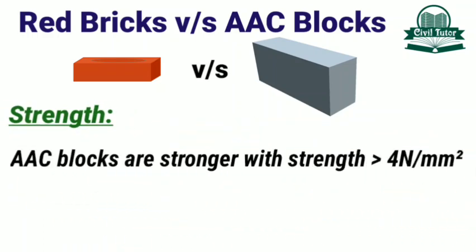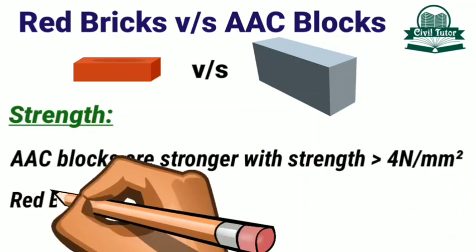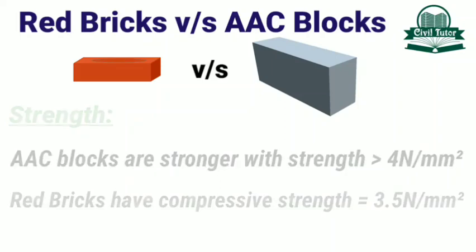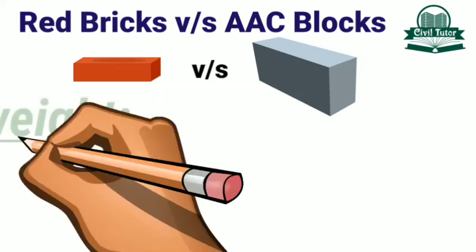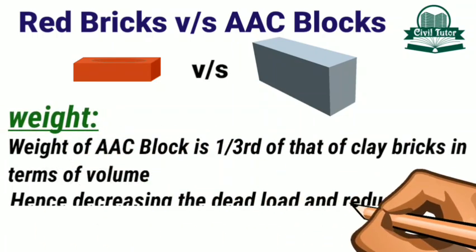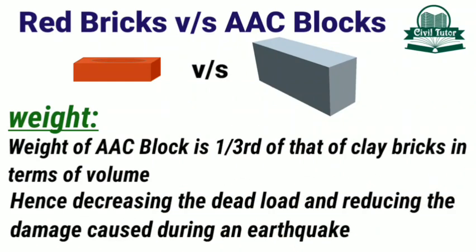AAC blocks are stronger with a compressive strength of more than 4 N per mm². While red bricks have a compressive strength of 3.5 N per mm². The weight of an AAC block is one third of that of clay bricks in terms of volume, hence decreasing the dead load of the structure and reducing the damage caused during an earthquake.